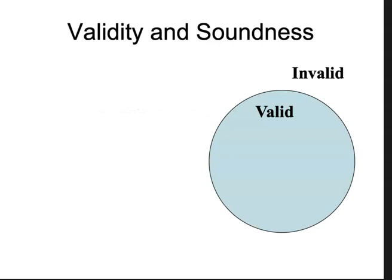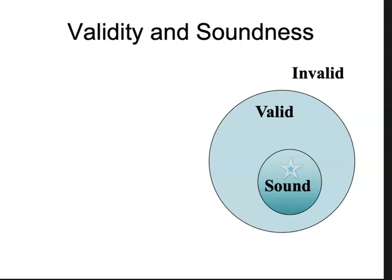I like to represent things a little bit more visually. For validity and soundness, imagine all the valid arguments are in that blue circle. All the invalid arguments are out. And inside the valid circle, we have arguments that are sound. It's possible that an argument is valid but not sound, and it's not possible that an argument is sound but not valid, because soundness is contained wholly within the valid circle.